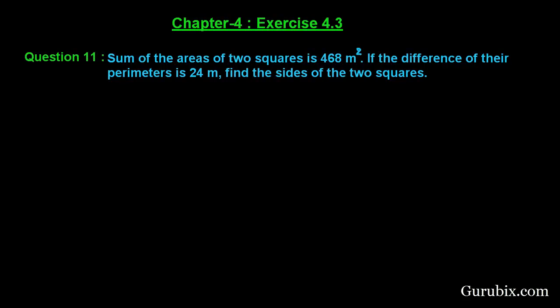Welcome friends, let us solve question number 11 of exercise 4.3 of chapter 4. The question says the sum of the areas of two squares is 468 square meters. If the difference of the perimeters is 24 meters, find the sides of the two squares. This is a very interesting question and important for examination point of view.